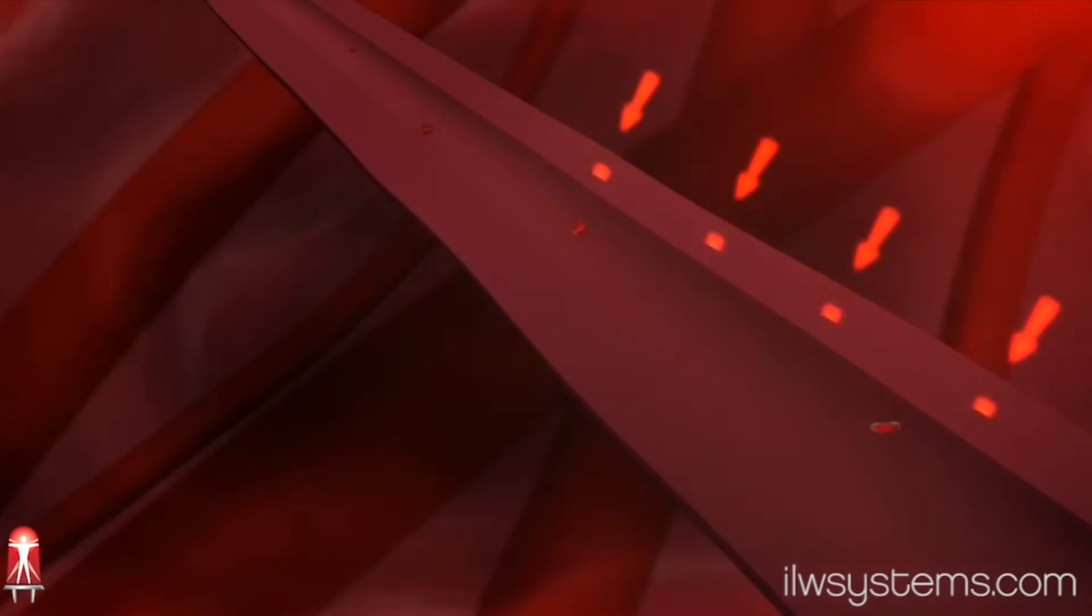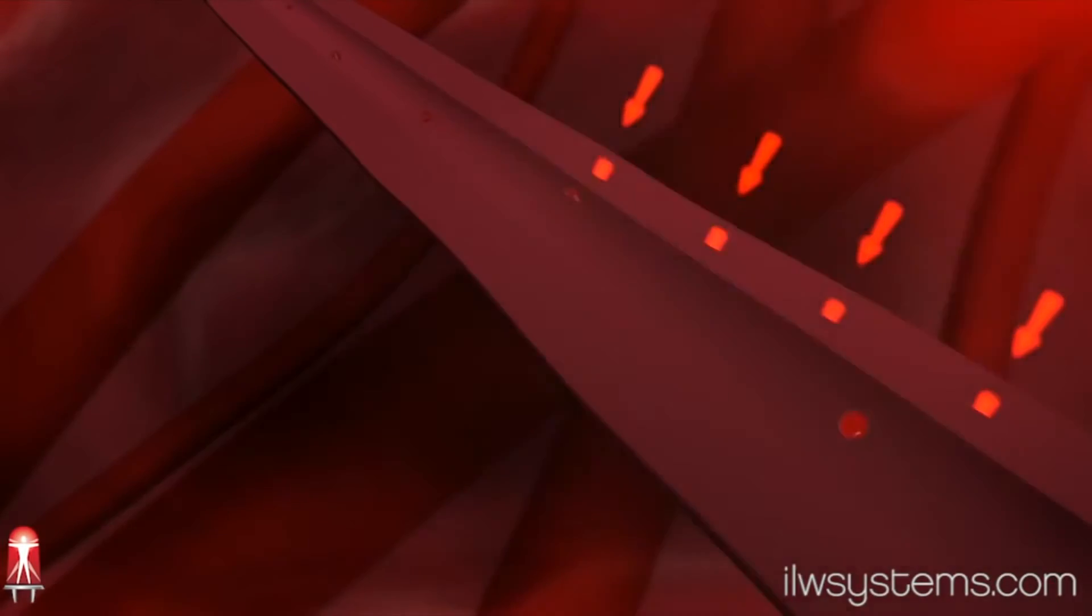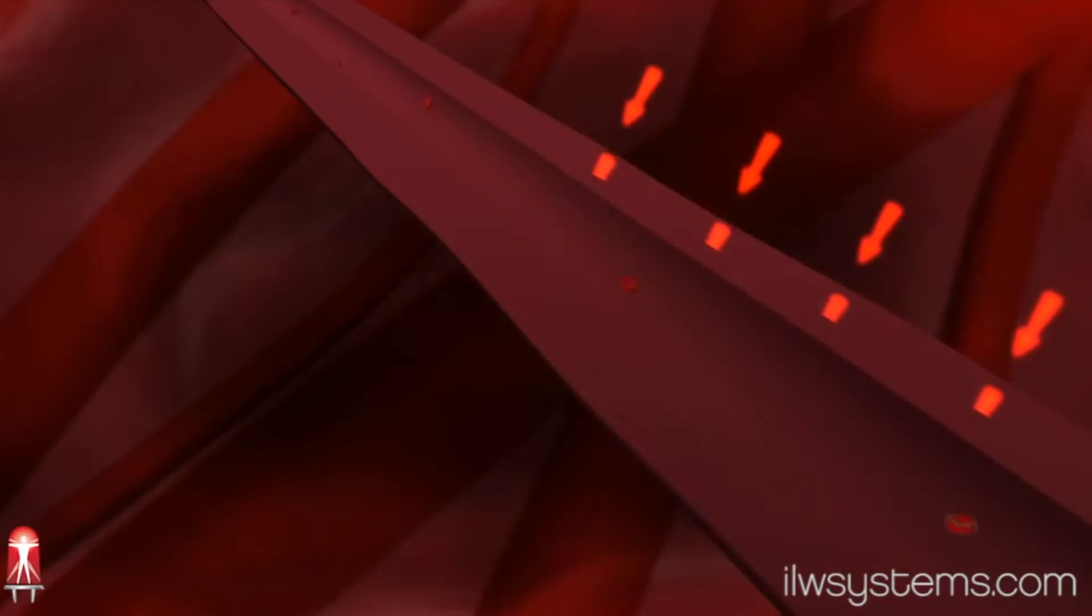Light energy stimulates the release of nitric oxide from hemoglobin into the bloodstream. When nitric oxide is released from hemoglobin, it enters the muscle cells in walls of the blood vessels. The muscle cells relax as the blood vessel diameter enlarges, allowing more blood to flow through the vessels.